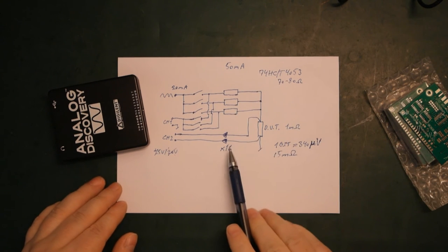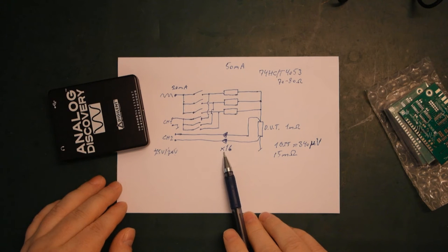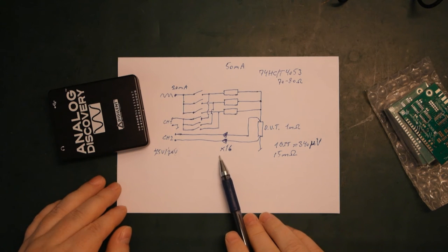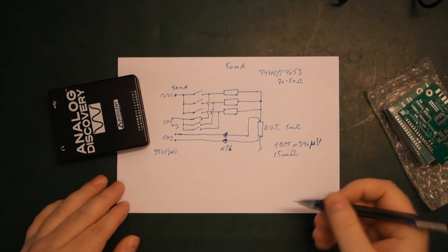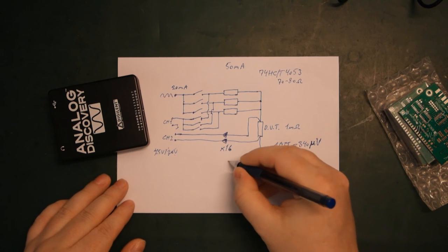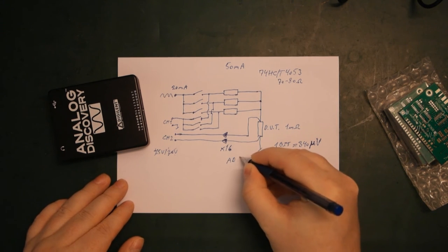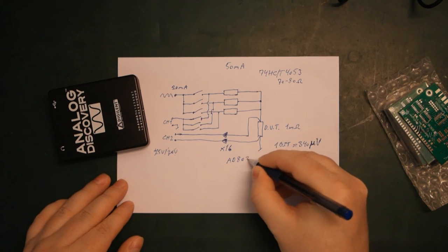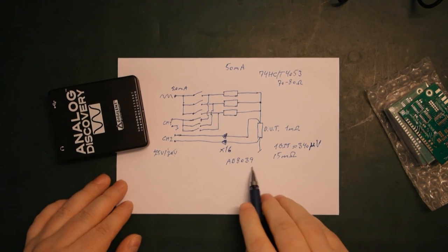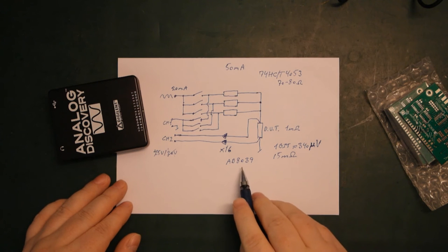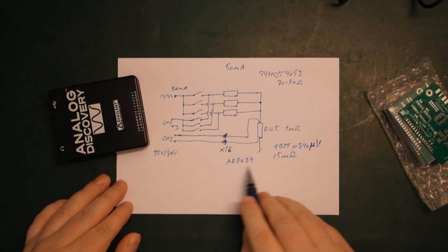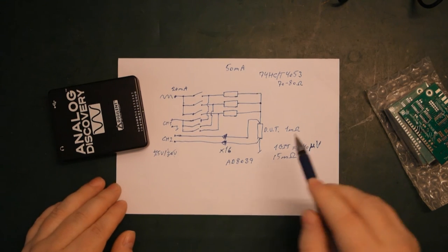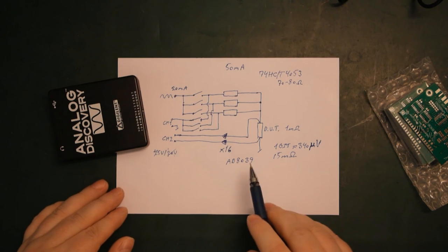So when you need to amplify a signal up to 20 megahertz 16 times, you need quite a high bandwidth op-amp. So the op-amps I've used here is called AD8039. So that's a dual, the single version is AD8038, but this is a dual op-amp.